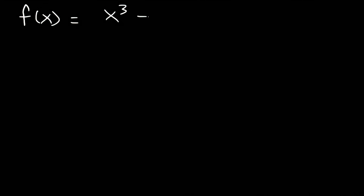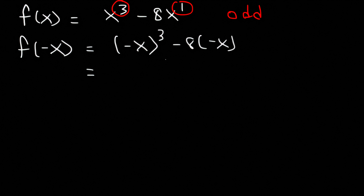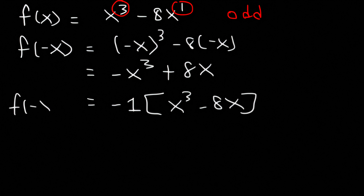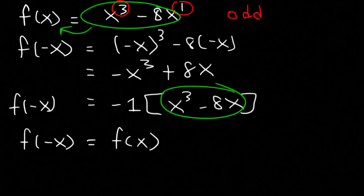What about x cubed minus 8x? Is that even or is it odd? Whenever you see an x, it's basically x to the 1st power. Now 1 and 3 are odd numbers, so this is going to be an odd function. Let's prove it: f of negative x gives us negative x to the 3rd power minus 8 times negative x, which equals negative x cubed plus 8x. Notice that all signs changed, so factor out a negative 1 to get negative 1 times x cubed minus 8x. Since x cubed minus 8x is f of x, we have f of negative x equal to negative f of x — it's odd.